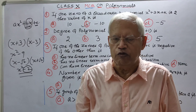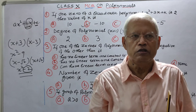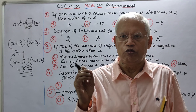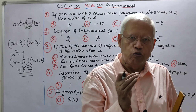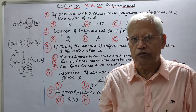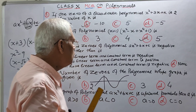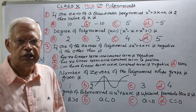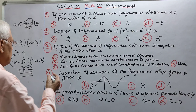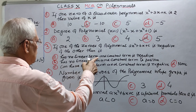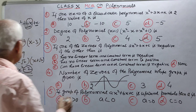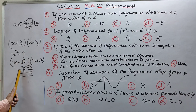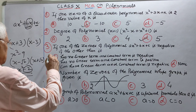Jaise x square minus four ek polynomial hai, toh iske zeros kitne honge? x equal to two aur x equal to minus two honge — kyunki two rakhne par bhi yeh zero ho raha hai aur minus two rakhne par bhi zero ho raha hai. Toh x square minus four mein linear term nahin hai. Answer: has no linear term and constant term is negative. So answer is A.